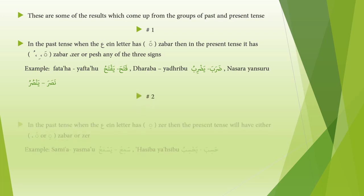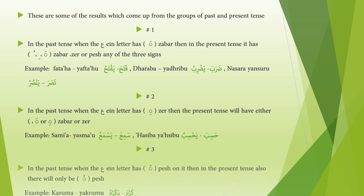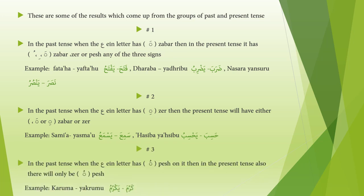Rule two: in the past tense, when the 'ain letter has zayr, then the present tense will have either zhabar or zayr. Examples: sami'a/yasma'u, hasiba/yahsibu. Rule three: in the past tense, when the 'ain letter has pejh on it, then in the present tense there will also be only pejh. Example: karuma/yakrumu.